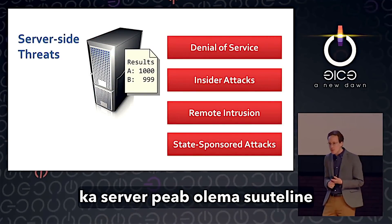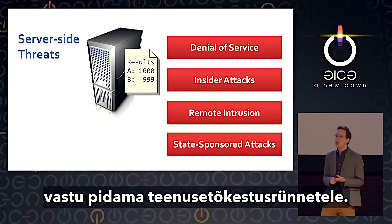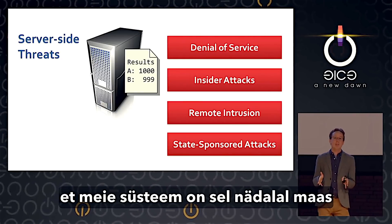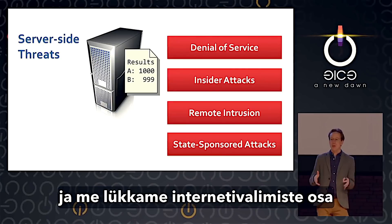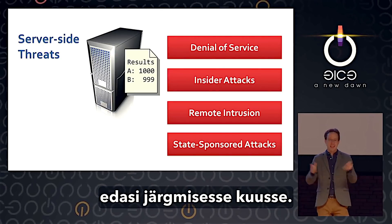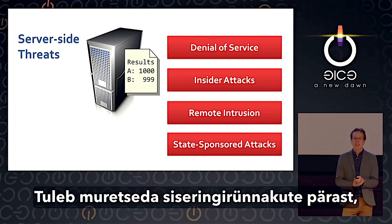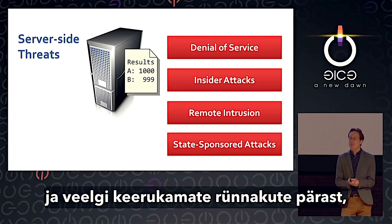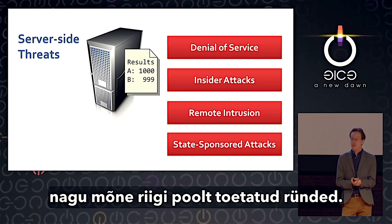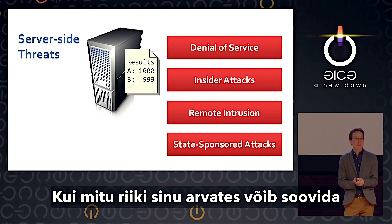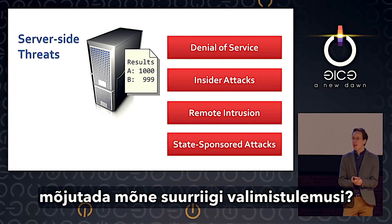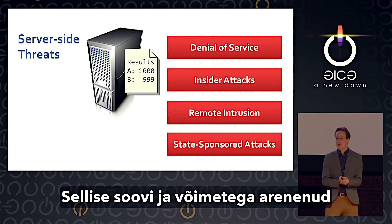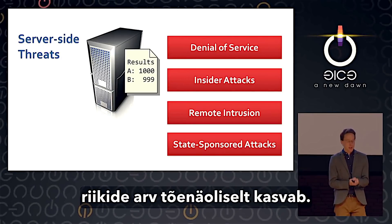And it's not only that — the server too has to be able to resist denial of service. An election takes place during a fixed period, so you can't say the system is down and postpone internet voting until next month. You have to worry about insider attacks on the server, about remote intrusion, even about more advanced attacks like state-sponsored threats. How many countries do you think might want to affect the outcome of a major country's national election?